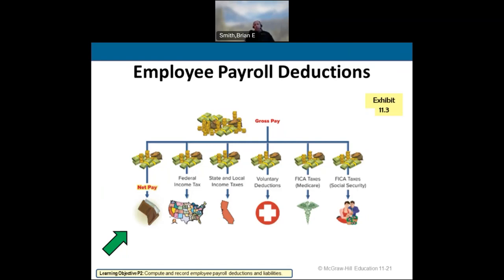From gross pay, certain deductions are mandatory. You've got to pay FICA taxes — Social Security and Medicare — whether you like it or not. Then there are state and local income taxes; California is one of the highest-taxed states. You also have federal income tax withheld. Then voluntary deductions like health insurance, dental insurance, or others you elect. Everything deducted from gross pay gives you your net pay — what actually hits your bank account.